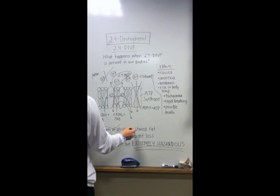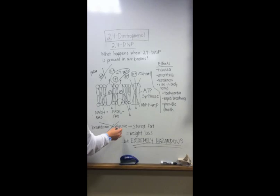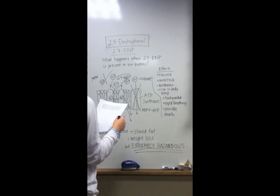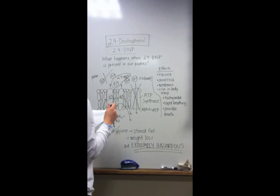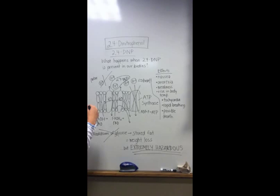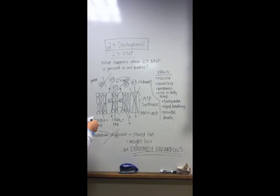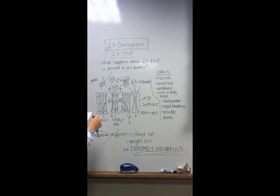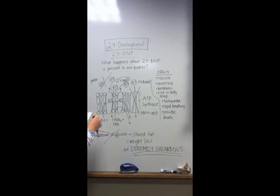Thus, taking 2,4-DNP does induce weight loss, but it's also extremely dangerous and could have fatal side effects. Some side effects include nausea, anorexia due to the extreme loss of weight, weakness because your body won't have enough ATP to fuel the activities of the cells, and swelling. More serious side effects include a rise in body temperature, since all the energy created by cellular respiration is released as heat, and tachycardia, which is when your heart exceeds the normal range, and rapid breathing. These two happen because as the rate of cellular respiration increases, your body is consuming more oxygen in an attempt to create more ATP, and also possible death if so much 2,4-DNP is taken, the cells die out due to a lack of ATP.